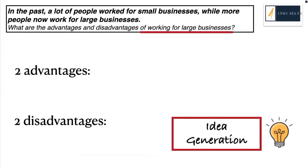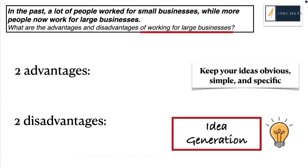Not only do we have to think about what the advantages and disadvantages are, but what do they refer to? The question asks: what are the advantages and disadvantages of working for large businesses? Don't just talk about the topic in general — make sure you answer the specific question. Keep your ideas obvious, simple, and specific. If you keep your ideas simple, you're going to find that you have the vocabulary and grammar to express them clearly. This is really important because a lot of your vocabulary and grammar marks come from accuracy. Obvious and simple ideas are easier to explain, which gives you a better task response mark and ensures your vocabulary and grammar are of a higher standard.